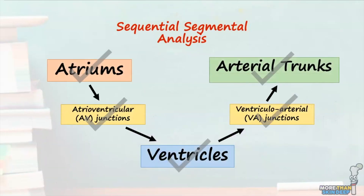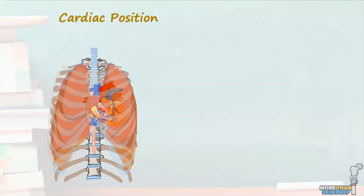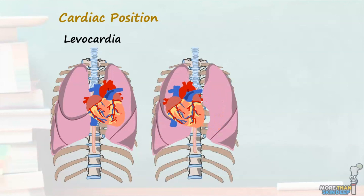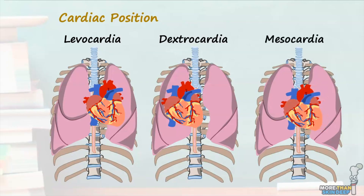Now we've covered the morphology of the cardiac and junctional segments, let's wrap up by considering two final morphological components to ensure a comprehensive and complete description of cardiac morphology. Alongside analysing the heart using sequential segmental analysis, the position of the heart within the thorax should also be considered. This image presents a schematic illustration of the thorax, and if we remove the thoracic wall and pleura, we can see the heart is positioned within the left hemithorax. This is the normal positioning of the heart, which is termed levocardia. In some cases, the heart may be positioned within the right hemithorax instead of the left, resulting in dextrocardia. Alternatively, the heart can be positioned within the middle of the thoracic cavity, resulting in mesocardia.